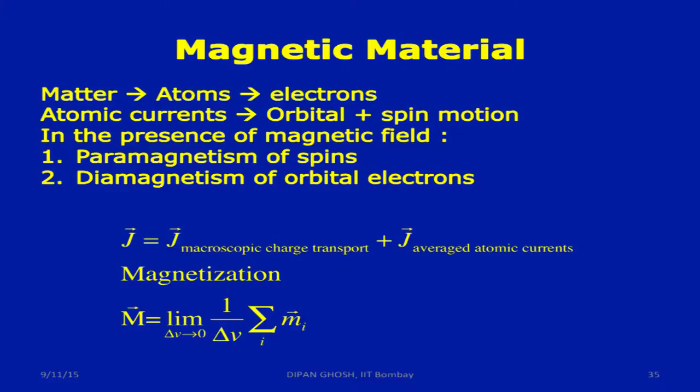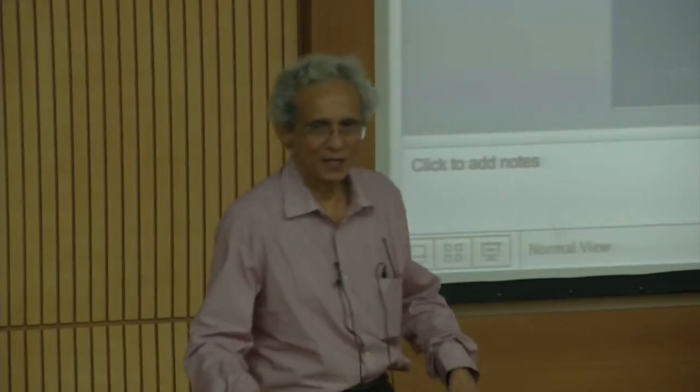This is my net current density. Like we define polarization vector as the net dipole moment per unit volume, I define the magnetization vector as net magnetic moment per unit volume of the current. You notice that everything is parallel.